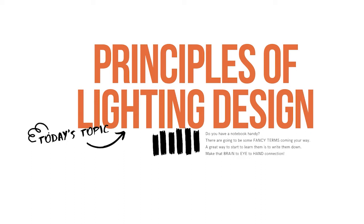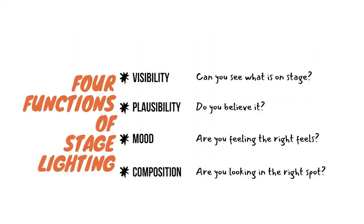If you start making that connection between your brain, your eye, and your hand, you're more likely to learn. The first thing to think about in terms of lighting design is to recognize what the four functions of stage lighting actually are: visibility, plausibility, mood, and composition. You can think of these four functions a lot like what lighting is actually supposed to do — what is its job in the theatre?